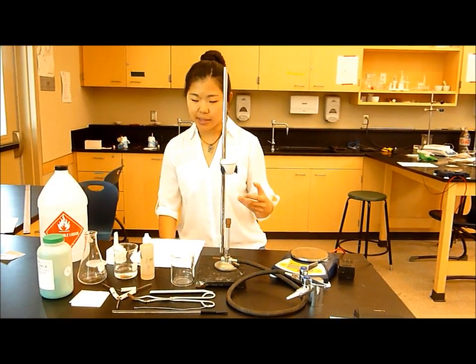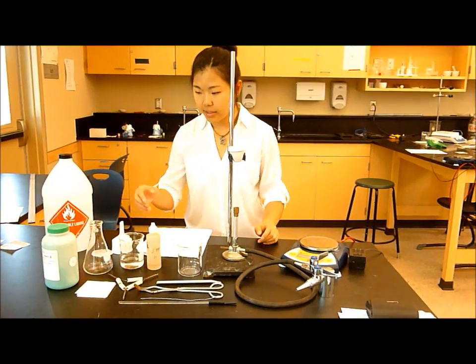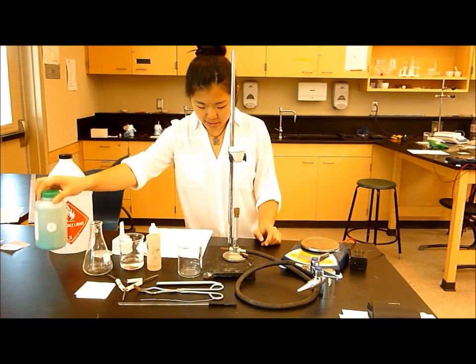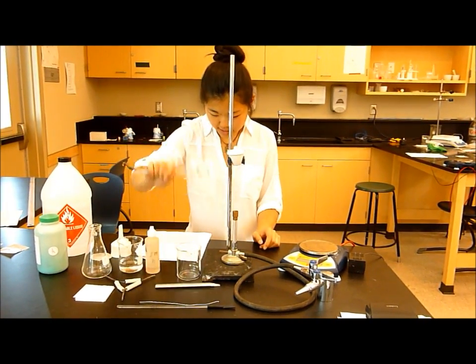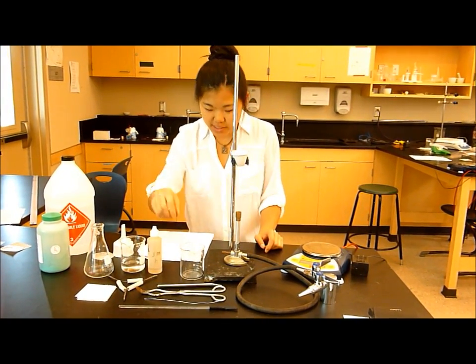First off, we need to gather the materials for our lab, and the materials that we need are going to be a crucible with cover, unknown solid copper chloride, crucible tongs, aluminum wire, 20 gauge,